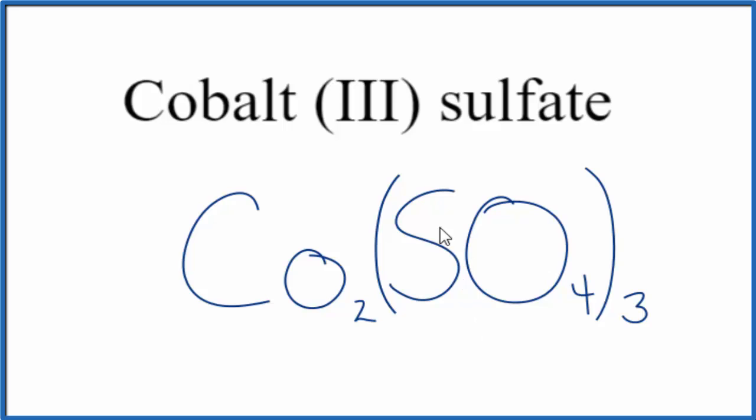And then because we have 3 of these sulfate ions, we need to put parentheses around the sulfate here. So this is the formula for cobalt III sulfate, Co2(SO4)3.